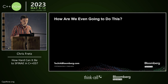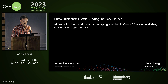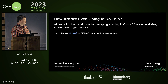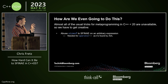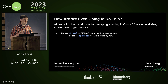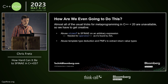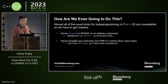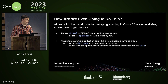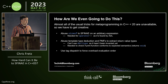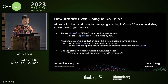So how do we do this? The first idea is that we're going to try to abuse sizeof to SFINAE on an arbitrary expression. We have to do this because we're trying to SFINAE on whether or not we have an ostream operator, which is found by ADL — so none of the normal partial specialization tricks are going to work. The next idea is to abuse template type deduction and pointer-to-member functions to extract return value types, since decltype hasn't been invented yet. This is needed to check if the print function returns void. We're also going to use tag dispatch to force overload evaluation order.